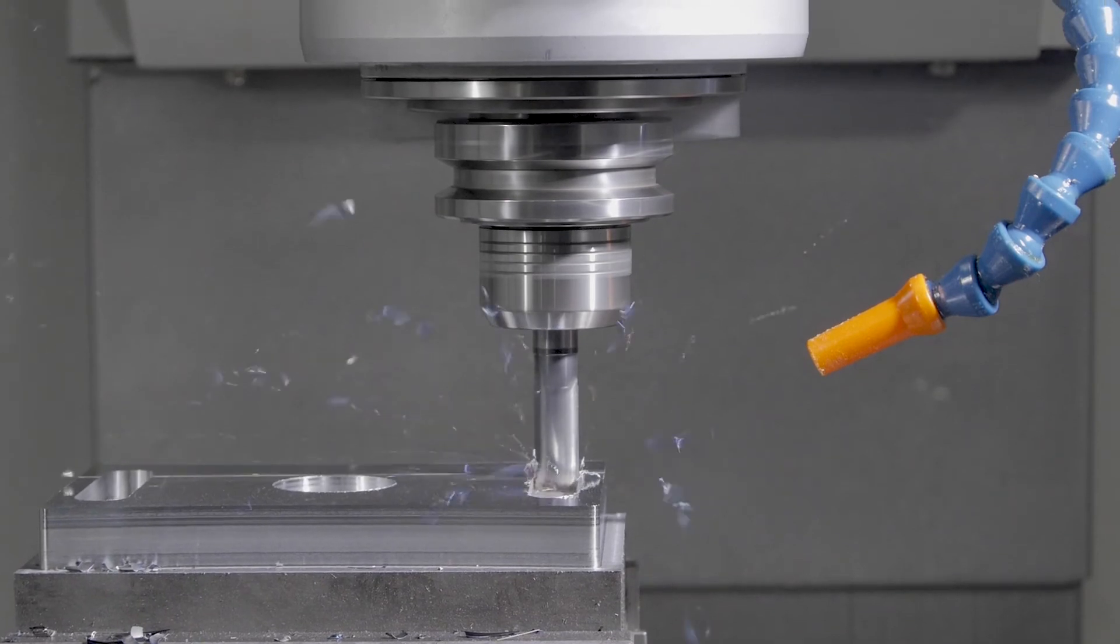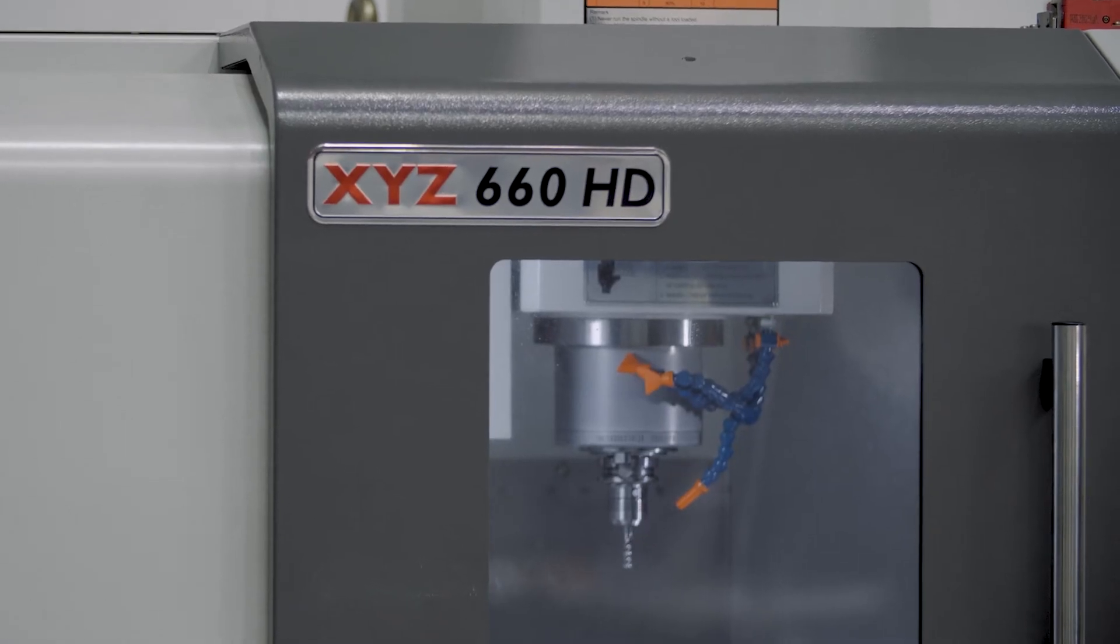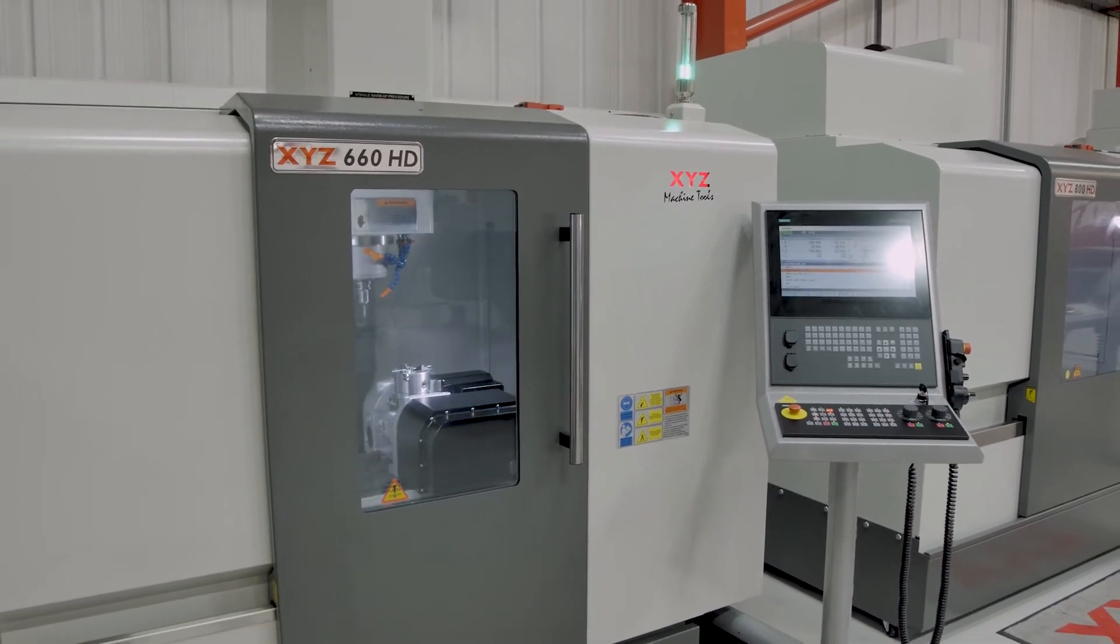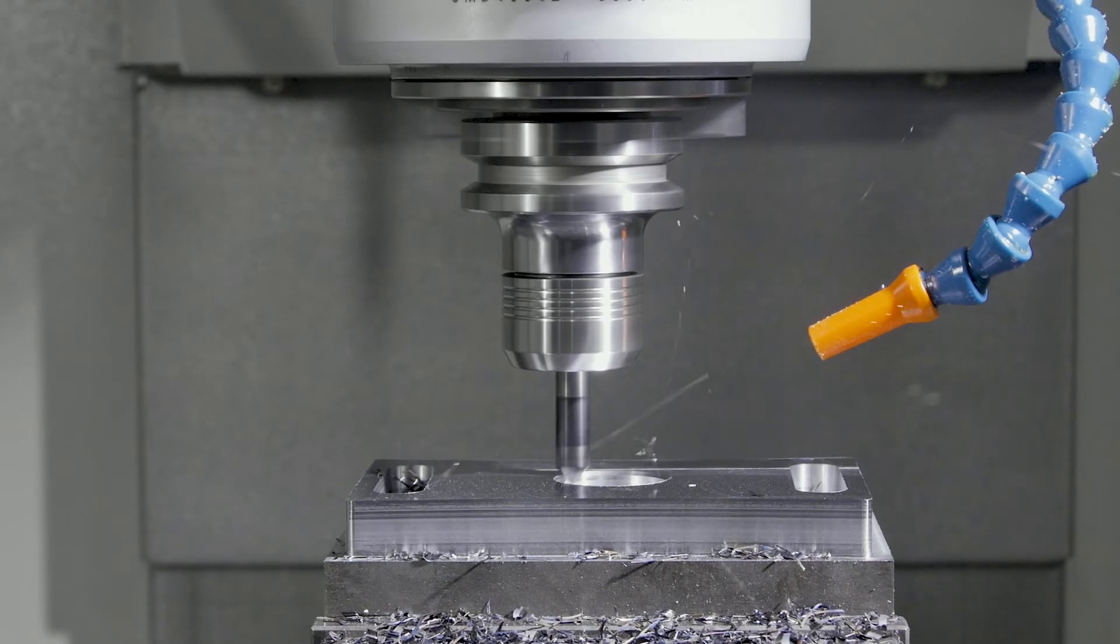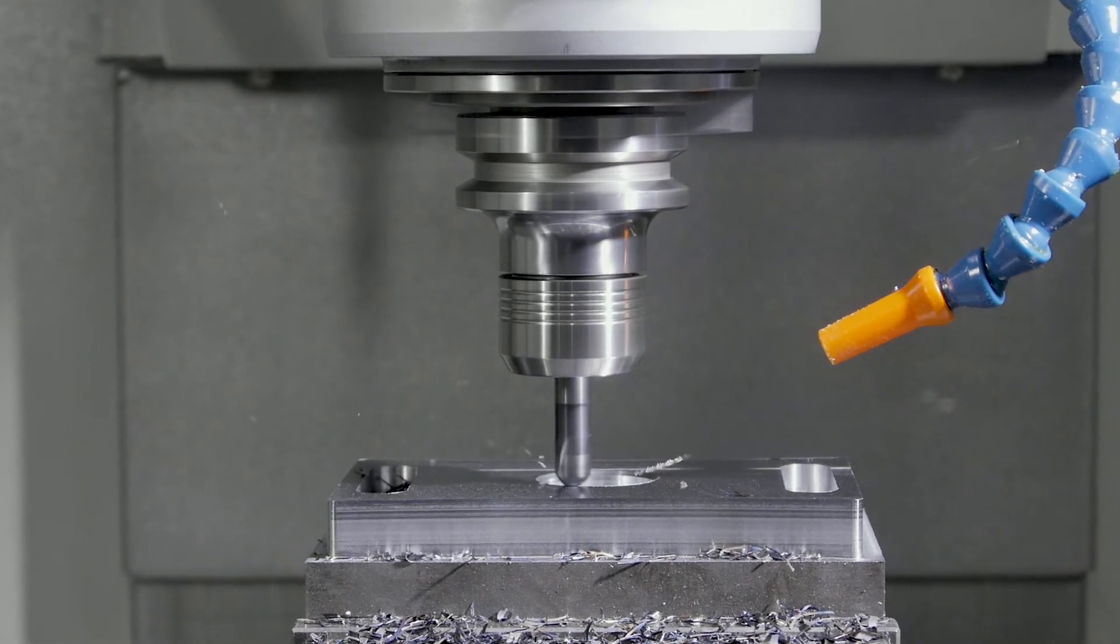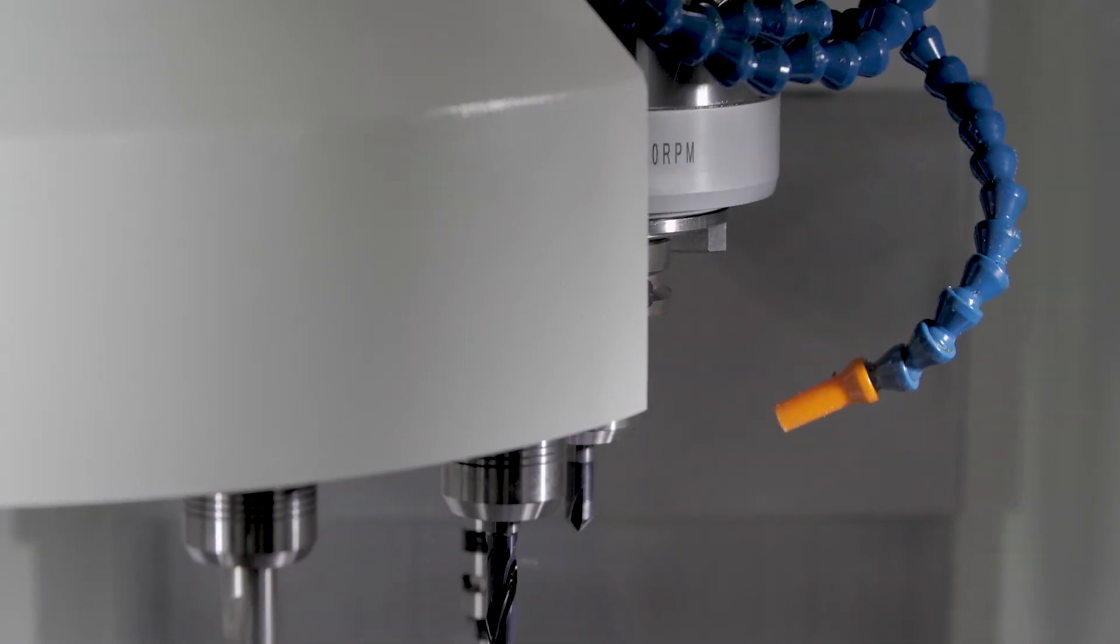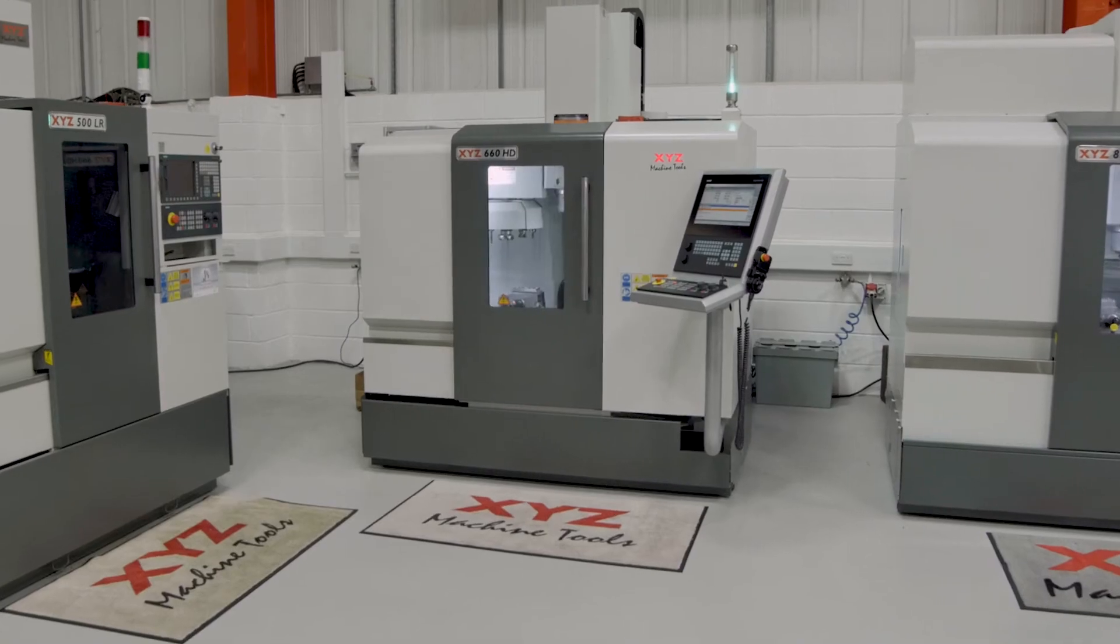A 28 horsepower, 21 kilowatt spindle motor with BT40 and 10,000 RPM is fitted as standard, with the option of an upgrade to 12,000 RPM. Also standard on this machine is a 12-station automatic tool changer, with larger machines in the range featuring 24-station tool changers.